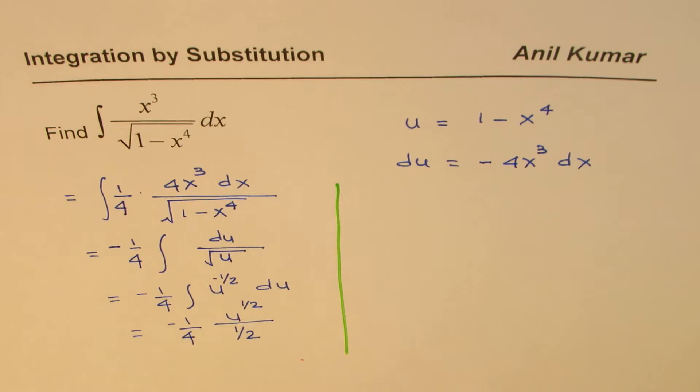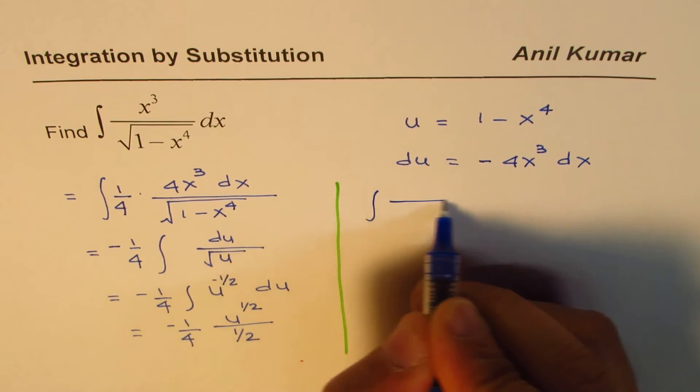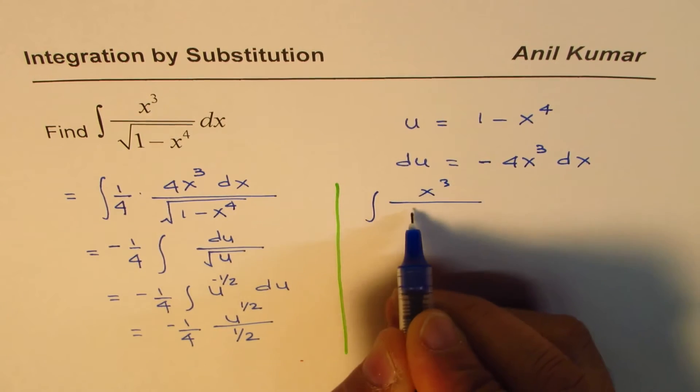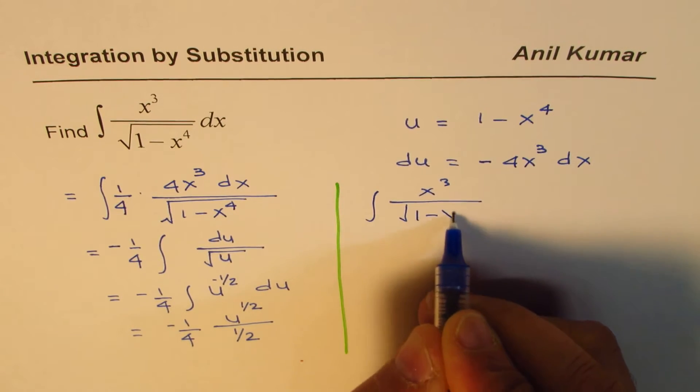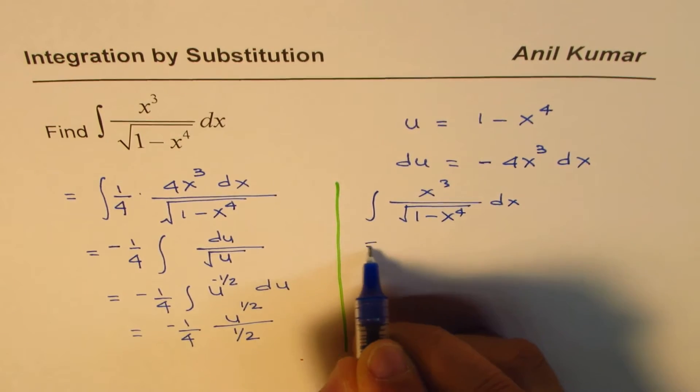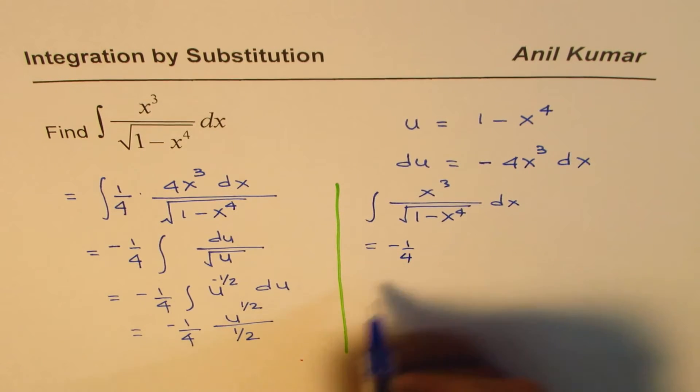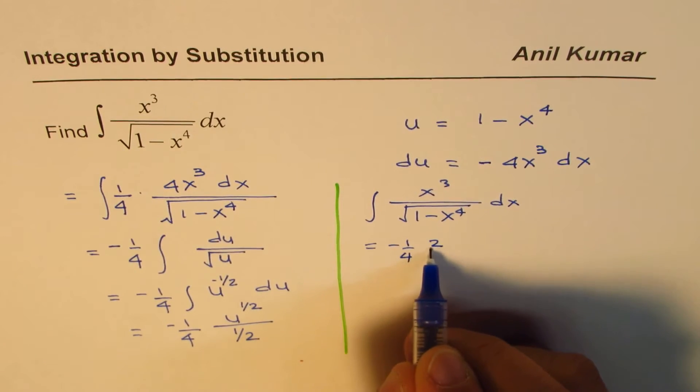So what we have here is that the integral of x cube over square root of 1 minus x to the power of 4 dx is equal to, so we'll take, we have minus 1 over 4, this could be written as 2 over 1.